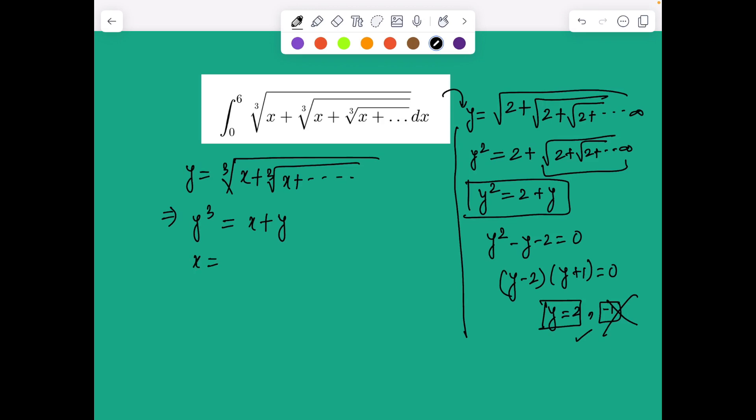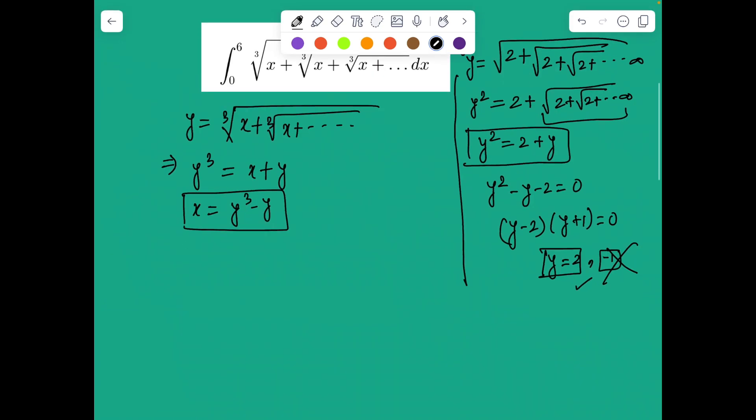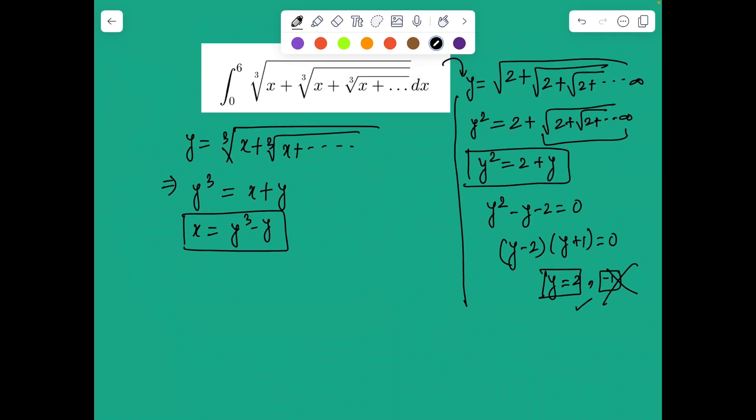Let's cube both sides. So y cubed is x plus y because that stuff will be back to y. Hence I got x equals y cubed minus y. Now a blind approach will be just to put dx, so we have 3y squared minus 1. I'll plug this in this integral.